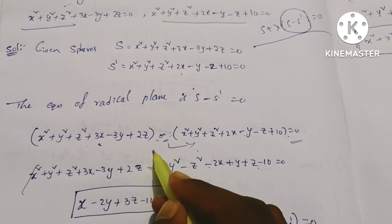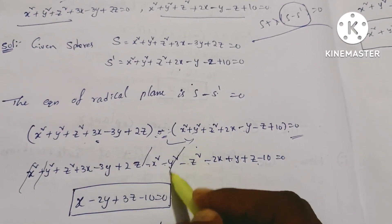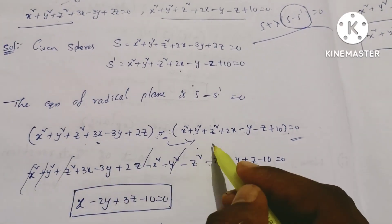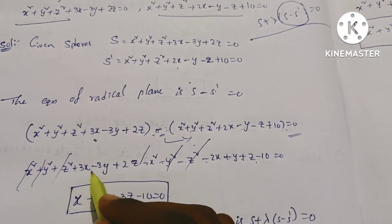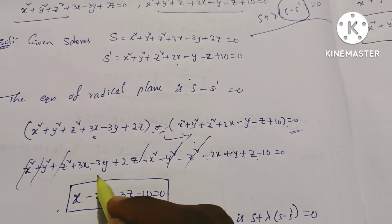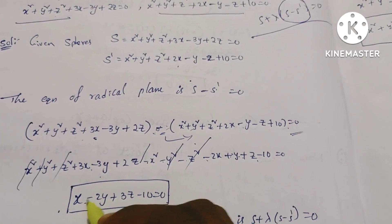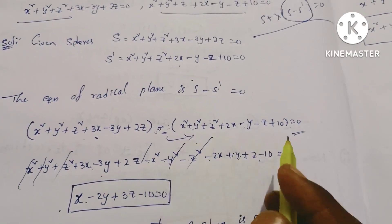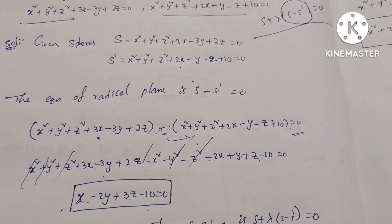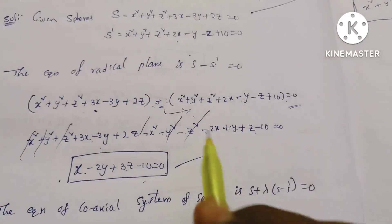Simplifying: X squared minus X squared cancels, Y squared minus Y squared cancels, Z squared minus Z squared cancels. The remaining terms are: 3X minus 2X equals X, minus 3X plus Y minus 2Y, and 2Z plus Z equals 3Z, minus 10 equals 0. So this is the equation of the radical plane.